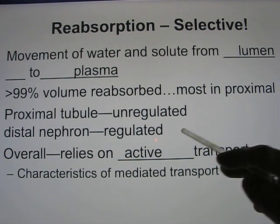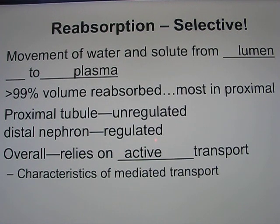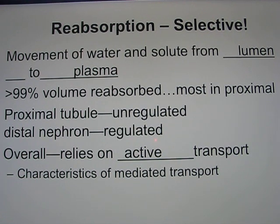In the distal tubule, there are 20% of molecules where you can decide to take more or less back. Overall, you need active transport because you are working against the concentration gradient most of the time. The membrane transport concepts you learned in unit 1 will come back in this part.